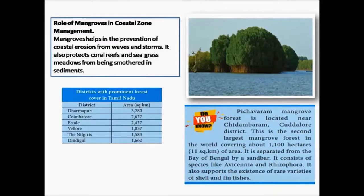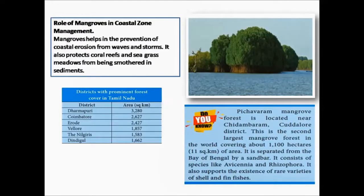Among the districts with prominent forest cover in Tamil Nadu, Dharmapuri has the maximum forest cover with an area of 3,280 square kilometers. Next is Coimbatore, followed by Erode, Villupuram, Nilgiris, and Dindigul.